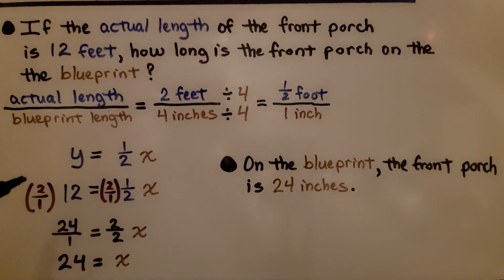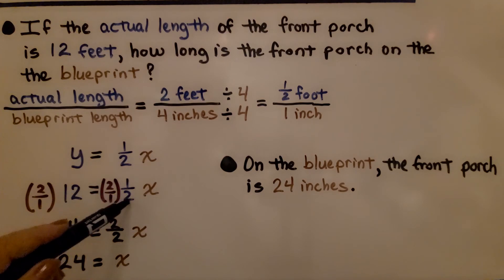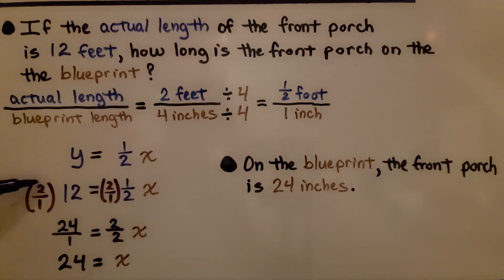Then we use the multiplication property of equality to multiply both sides of the equation by the reciprocal of one half as 2 over 1. We get 24 over 1, which is 24. And 2 over 2, which is 1. We get 24 is equal to x or x is equal to 24. On the blueprint, the front porch is 24 inches.